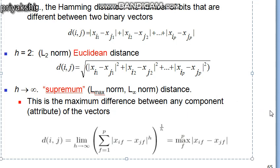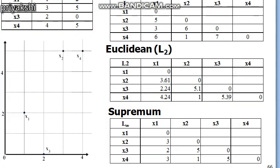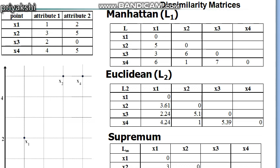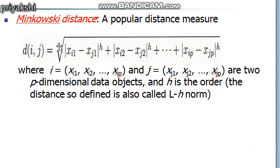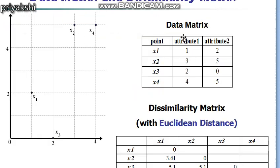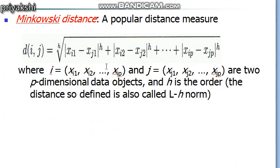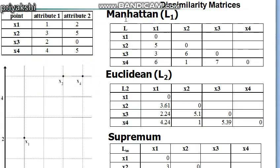Let's see how to compute these with our example. Don't get confused: h is a user-defined parameter and is not equal to the number of dimensions. The number of attributes is always defined by p — in our case p equals 2 because we are considering only two attributes. h is a different, separate user-defined parameter.